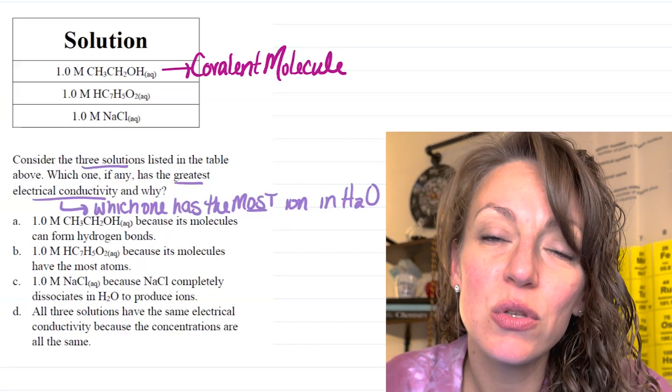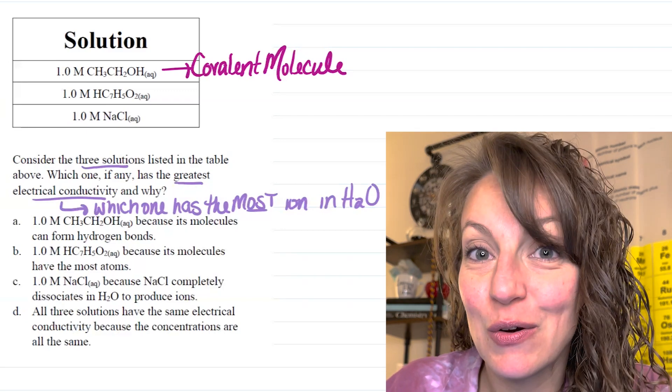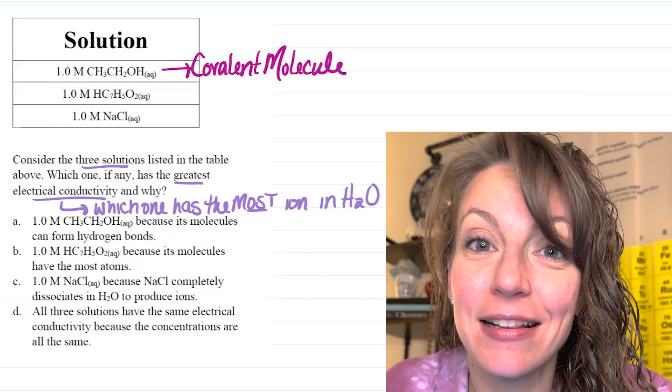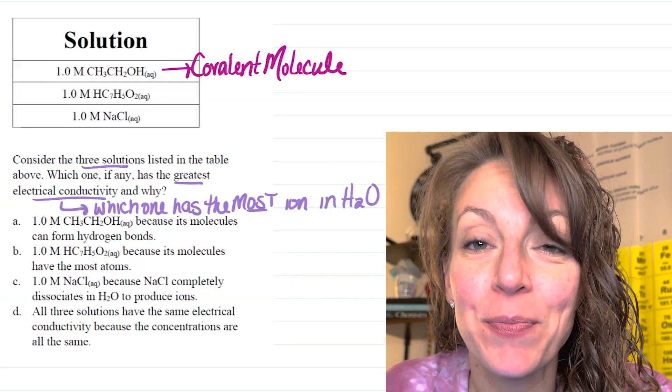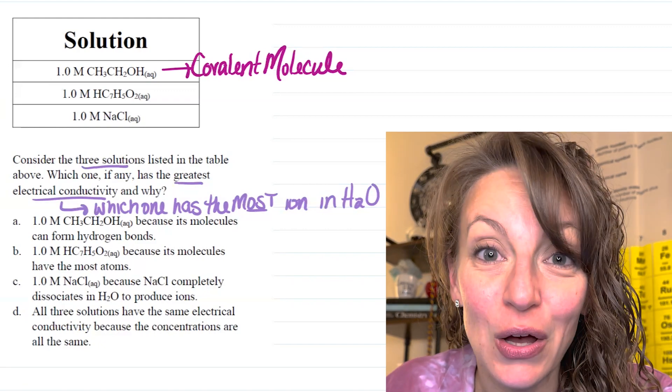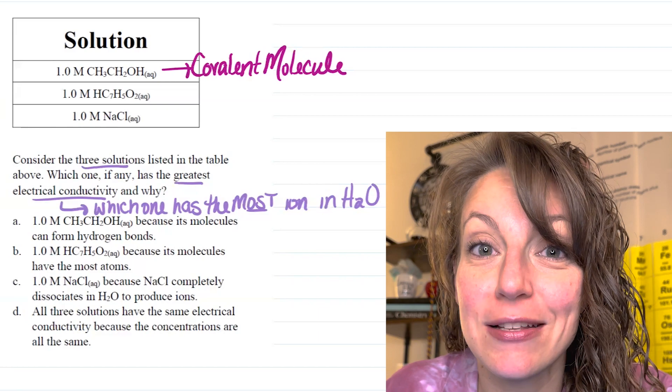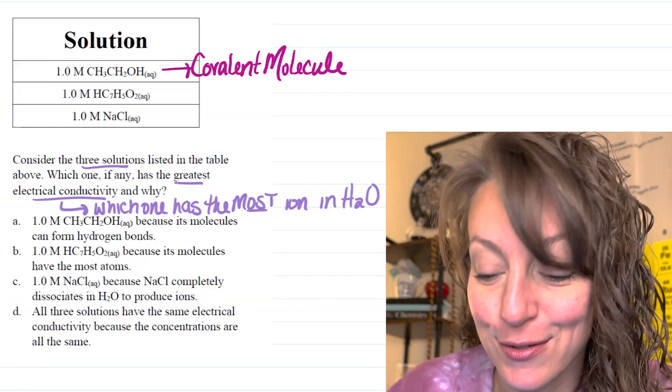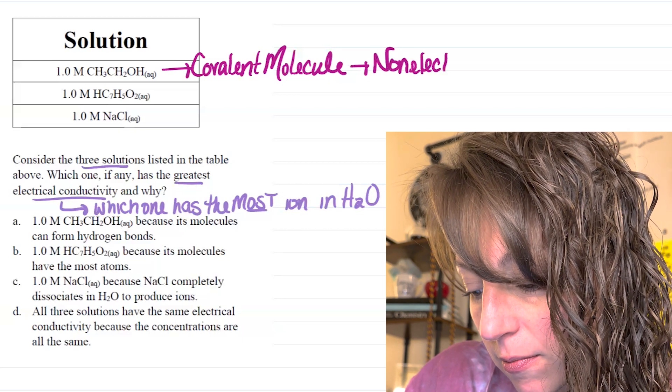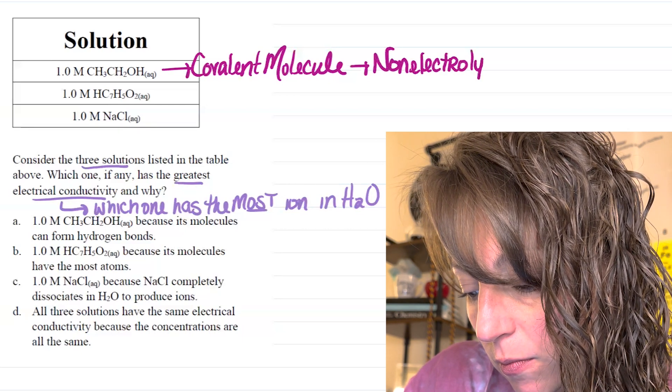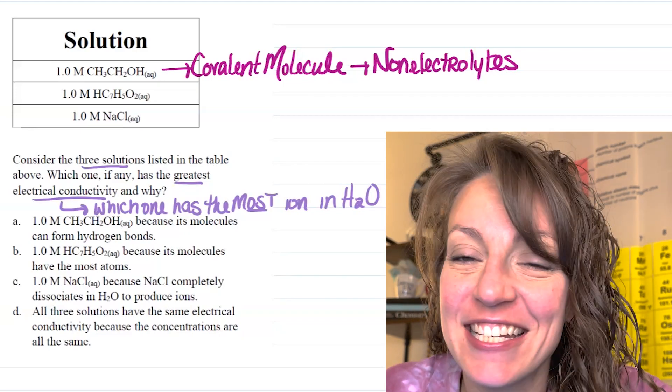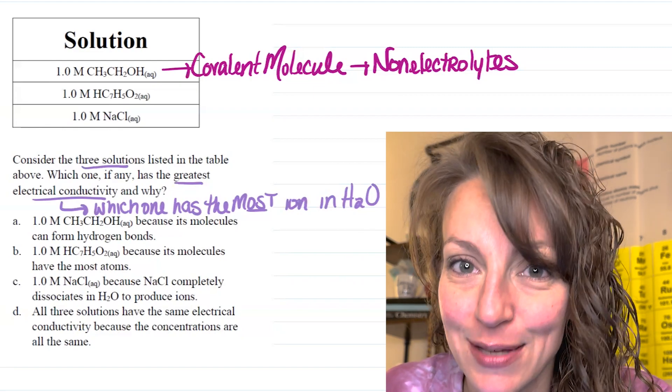Now, since covalent molecules form through a covalent bond, where those atoms form orbital overlaps and allow their electrons to share common space, they do not have the ability to form ions in solution. So, covalent molecules are considered to be non-electrolytes when in solution. Now, non-electrolytes are not going to conduct any electricity because they lack those ions.